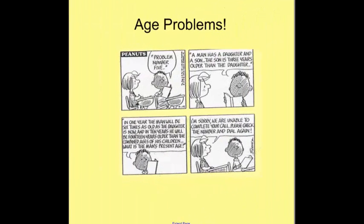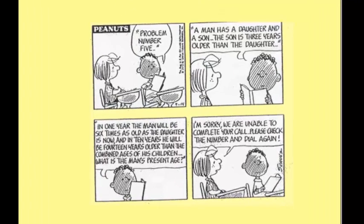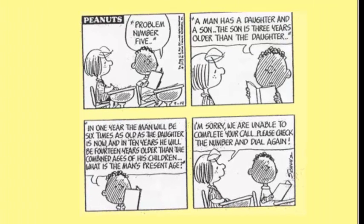Next we're going to take a look at age problems. Now age problems tend to be a little bit like this comic, and if you read the comic you will understand what I mean. Problem number five: a man has a daughter and a son. The son is three years older than the daughter. In one year the man will be six times as old as the daughter is now, and in ten years he'll be 14 years older than the combined ages of his children. What is the man's present age?